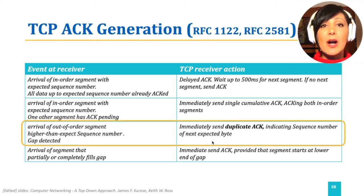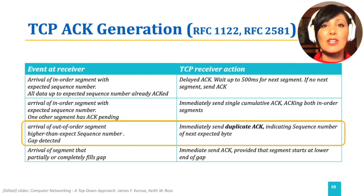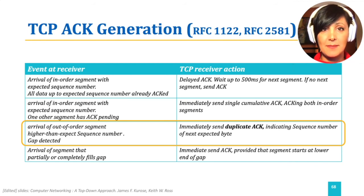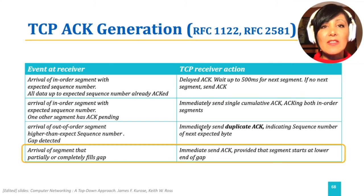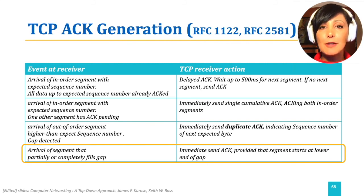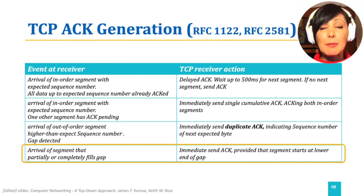On the arrival of out-of-order segments with a higher-than-expected sequence number, the receiver immediately sends the duplicate ACK for the last in-order segment, indicating the expected byte. Remember, what TCP does with the out-of-order segment is upon the decision of the implementer. On the arrival of a segment that partially or completely fills the gap previously observed, if the new segment fills the lower part of the gap ensuring an in-order expected byte change, the receiver sends an immediate ACK acknowledging all the in-order data received.